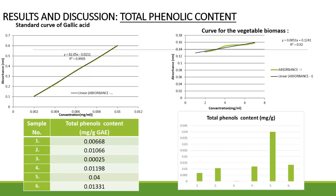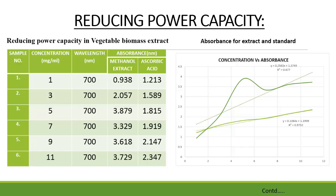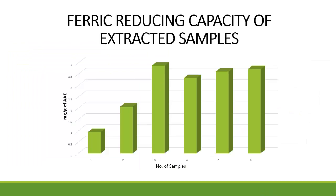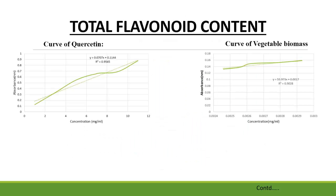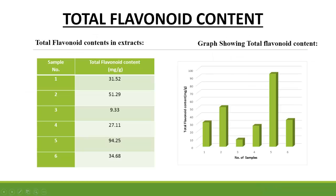These are the results and discussion. The first result shown is for the total flavonoid content, followed by the result for the reducing power capacity, and then the result for the scavenging capacity of the samples. The total flavonoid content is highest in sample 5.